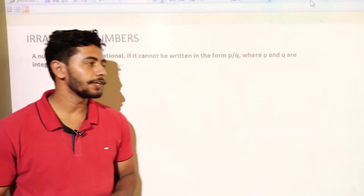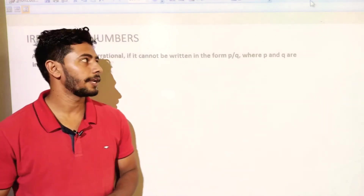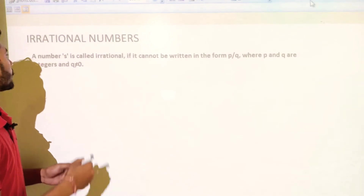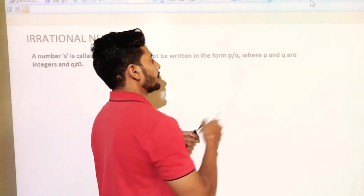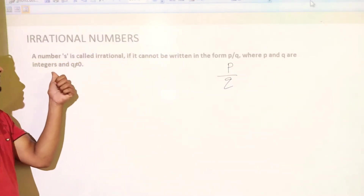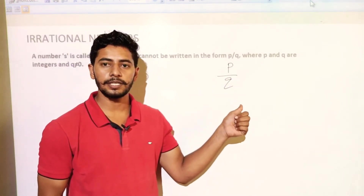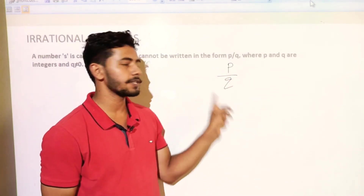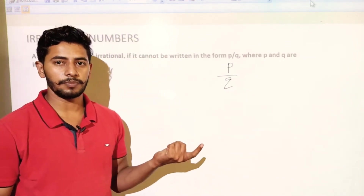Hello everyone. In today's video we will solve exercise 1.2. Before that, let's know about irrational numbers. A number is called irrational if it cannot be written in the form P over Q, where P and Q are integers and Q is not equal to 0.